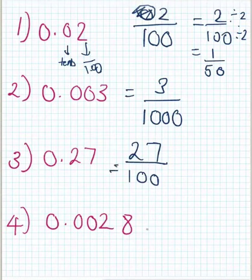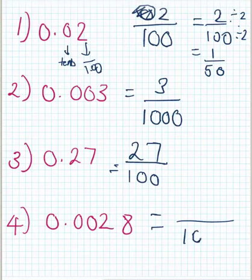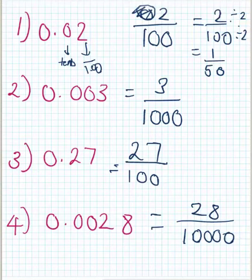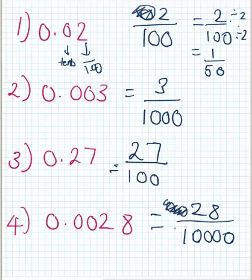Number four — count the decimal places: one, two, three, four. So that's one and four zeros, giving ten thousand. The number 28 goes on top. You could write zero, zero, two, eight, but the leading zeros don't need to be there, so we write 28 on top. That's all you have to do: count how many decimal places, that gives the number of zeros on the bottom, and the numbers after the decimal go on top. Leading zeros on the numerator are invisible.